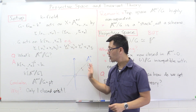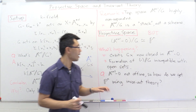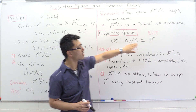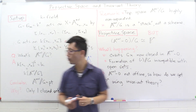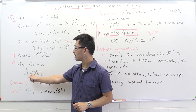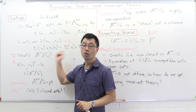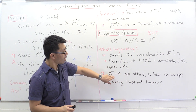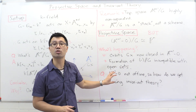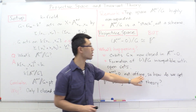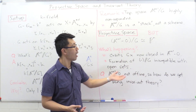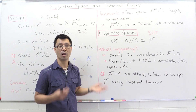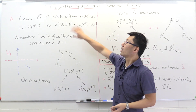This raises the question: how do you set up this theory properly? I've explained how to form a scheme quotient when you have an affine scheme — you look at invariant rings. But A^{n+1} minus zero is not an affine variety. So the natural question is: how do we actually obtain P^n using invariant theory?